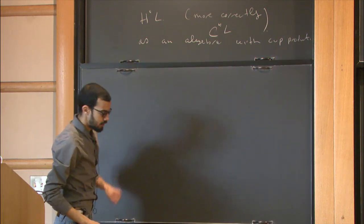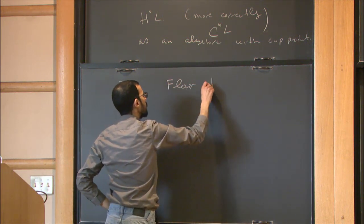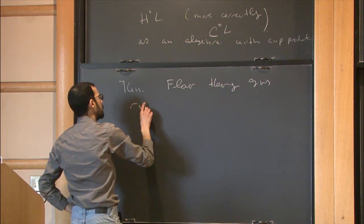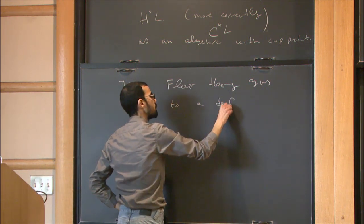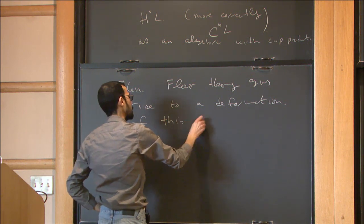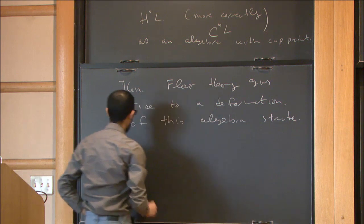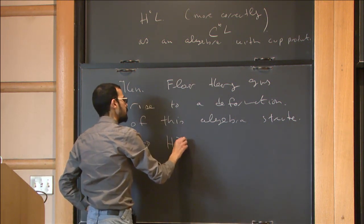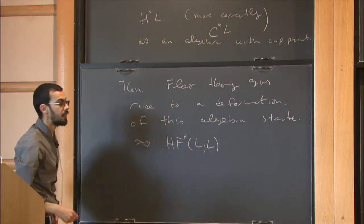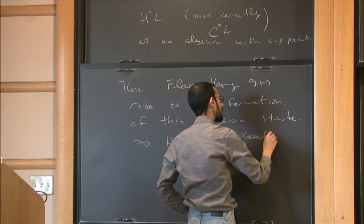That's our starting point. Floer theory gives rise to a deformation of this algebra structure, which gets called Floer cohomology of L. Because it turns out you can do this in pairs, you can do FL(L,L), and more correctly, you should do this at the chain level.